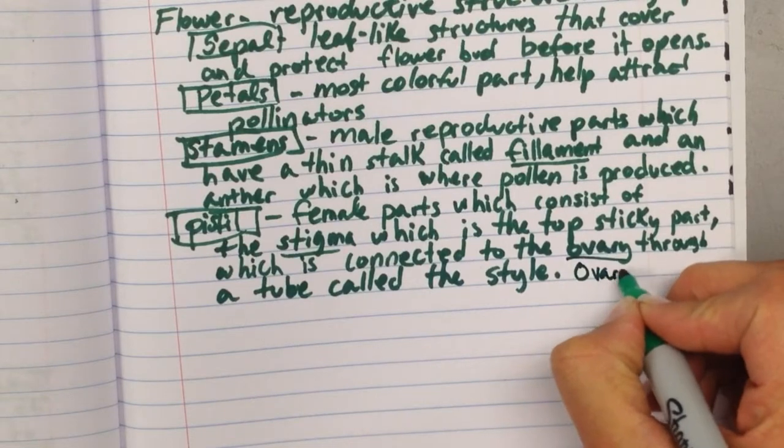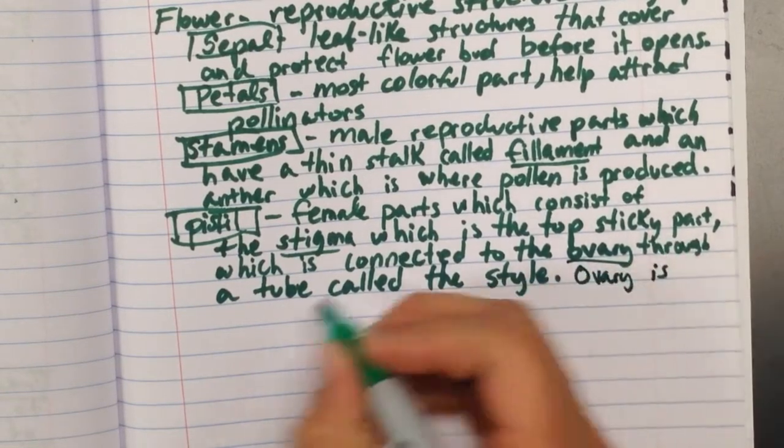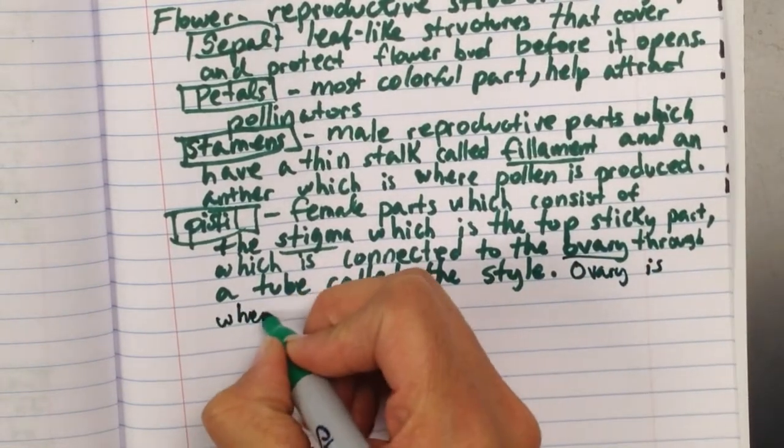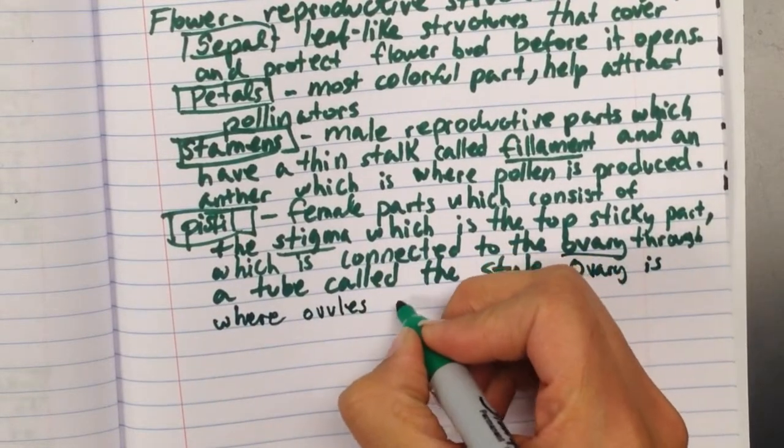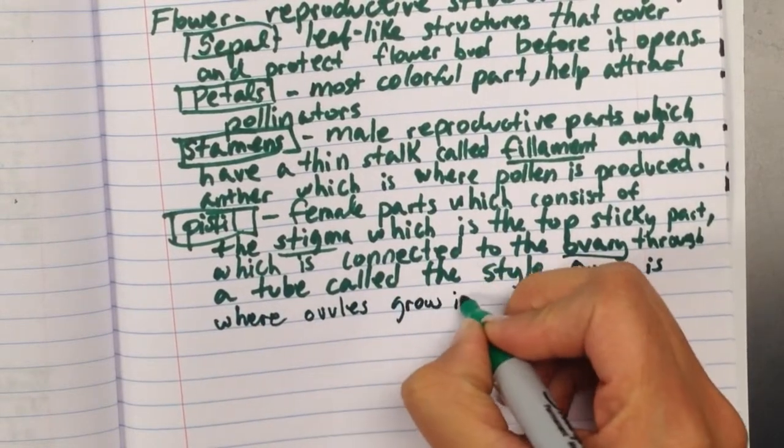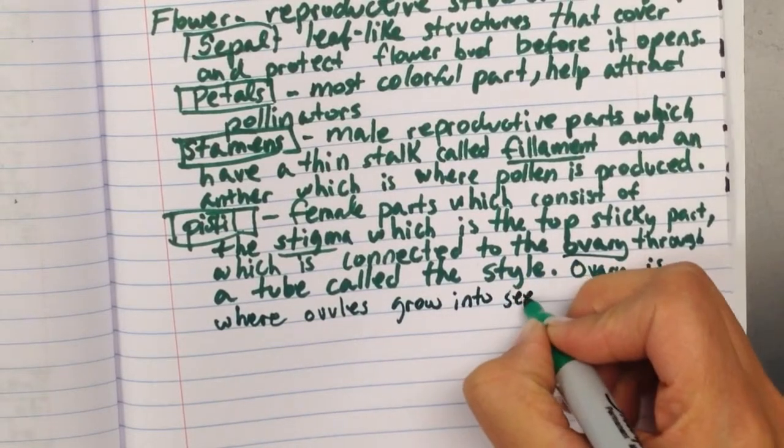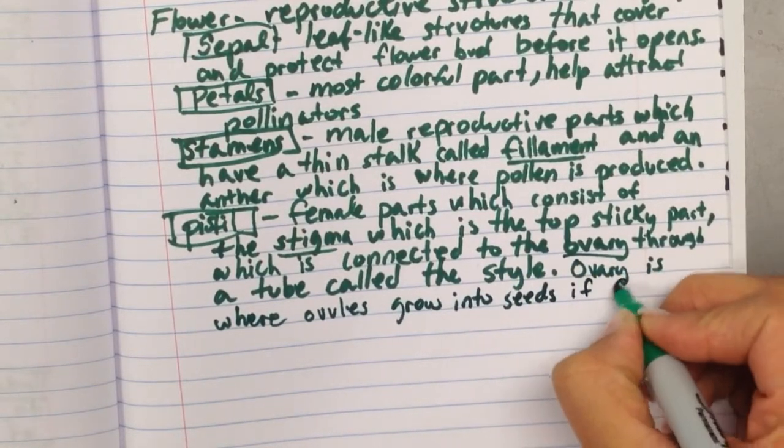We're turning to the ovary through a tube called the style. And the ovary, as you guessed it, is where ovules, or egg cells, where ovules grow into seeds if there is fertilization, grown to seeds if fertilized.